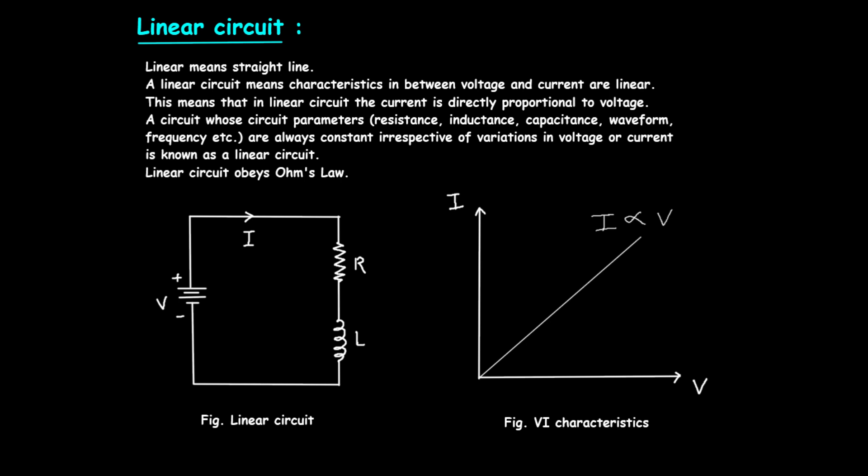First, let's define what a linear circuit is. A linear circuit is one in which the relationship between the voltage across the circuit and the current flowing through the circuit is linear. This means that if you increase the voltage, the current increases proportionally. Simply put, in a linear circuit, doubling the voltage will double the current. This proportional relationship can be represented graphically by a straight line.